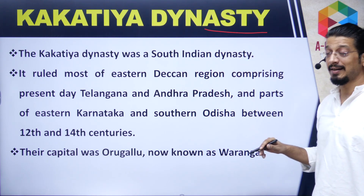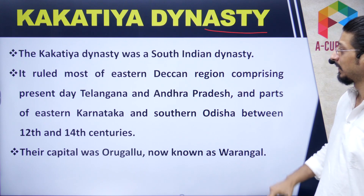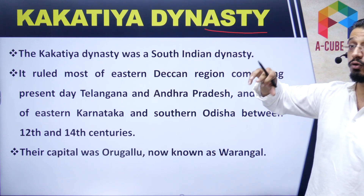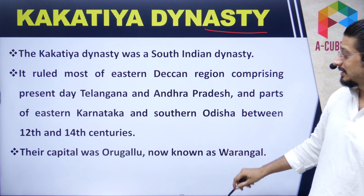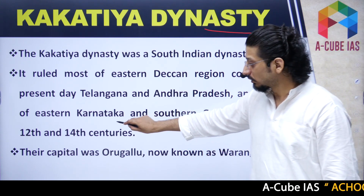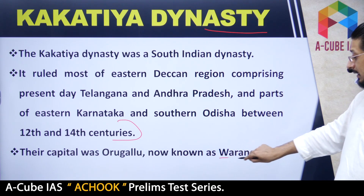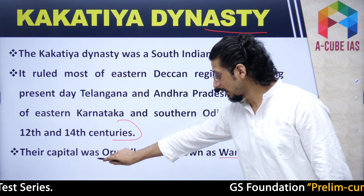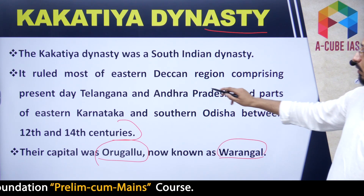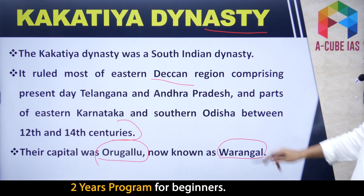Now for the ancient history context: the Kakatiya dynasty ruled present-day Telangana, Andhra Pradesh, eastern Karnataka, and southern Odisha. They ruled between the 12th and 14th centuries. Their capital was present-day Warangal, which at that time was called Orugallu. So this was the eastern Deccan region — Telangana, Andhra Pradesh, parts of eastern Karnataka, and southern Odisha — between the 12th and 14th centuries, with Warangal as their capital.